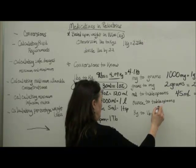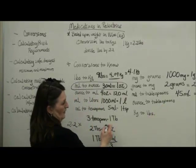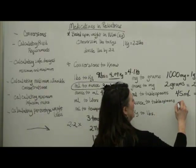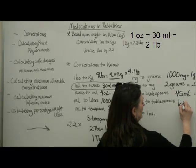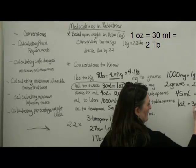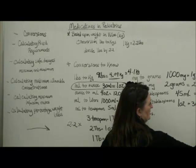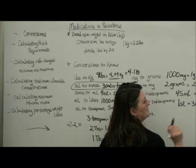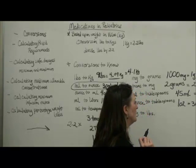Ounces to tablespoons. We already did that down here. I've got ahead of myself. One ounce, which is 30 milliliters, which is 2 tablespoons, because there's 15 milliliters in a tablespoon.